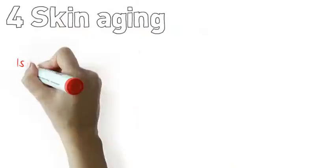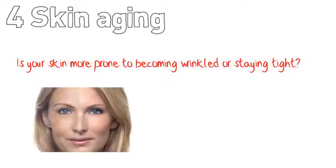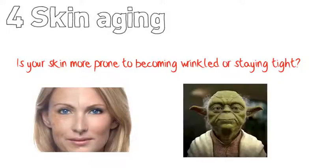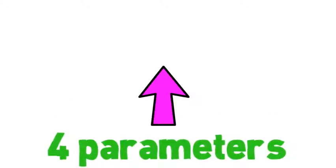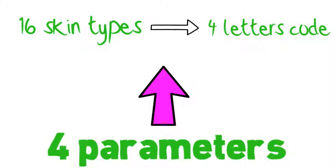Skin aging defines if your skin tends to become wrinkled or stay tight, or in few words if you like Yoda look or not. Based on these parameters, it is possible to identify 16 skin types, each coded 4 letters. Let's find out your 4 letter code.